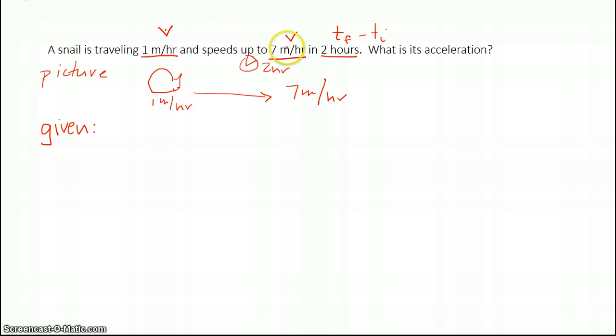So I can write Tf minus Ti. Some of you, I know, are just writing T, and that's perfectly fine too. Now I need to figure out between these two which one is my initial velocity and which one is my final, because they have to either be initial or final. The snail is traveling one meter per hour. It looks like this is what it started off with. I write that as my initial, and this here I write as my final, because that's where it ends up.